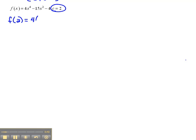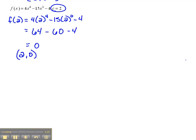So that would be 4 times 2 to the fourth minus 15 times 2 squared minus 4. So let's see, 2 to the fourth would be 16, times 4 would be 64, and 2 squared would be 4, times negative 15 would be negative 60, and then minus 4. So 64 minus 60 would be 4, minus 4 is 0. That is giving us a point of (2, 0).